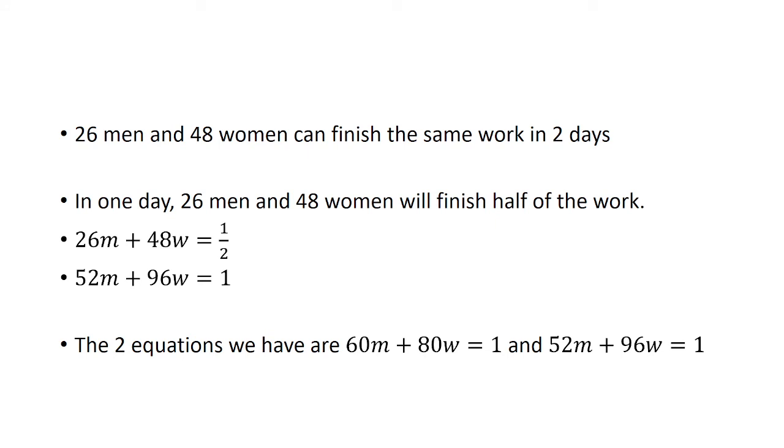So we have two equations now: 60m plus 80w equals 1, and 52m plus 96w equals 1. Because they're both equal to 1, I can set them equal to each other.